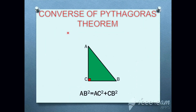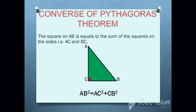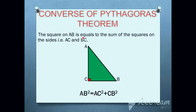Next, the Converse of Pythagoras theorem. The square on AB is equal to the sum of the squares on the sides AC and BC. According to this formula, it will be: AB square is equal to AC square plus CB square.